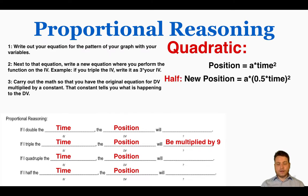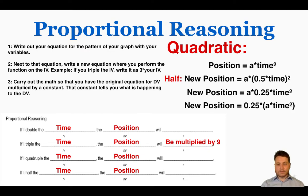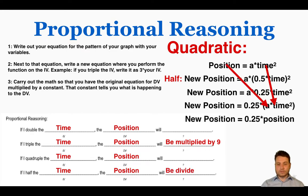We can also try halving the time — multiplying time by one half. Carrying out that square gives one quarter, or 0.25. Isolating A × time² shows the new position equals the original position times 0.25, which is the same as dividing by four. That's what happens to the position if you halve the time in a quadratic graph.